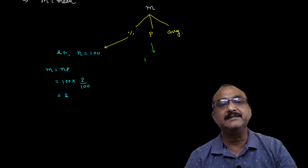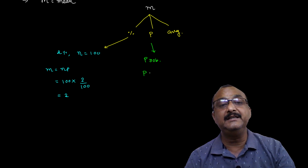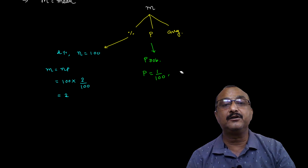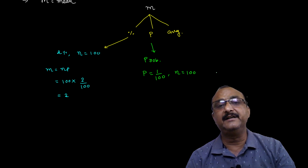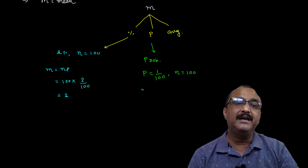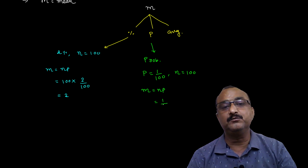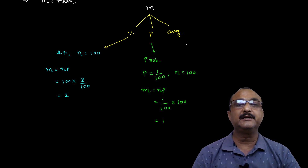For the probability method: if it is given that the probability of a defective item is 1/100 in a lot of 100 items, then M equals Np. Here p equals 1/100 and N equals 100, so the 100s cancel out and M equals 1.